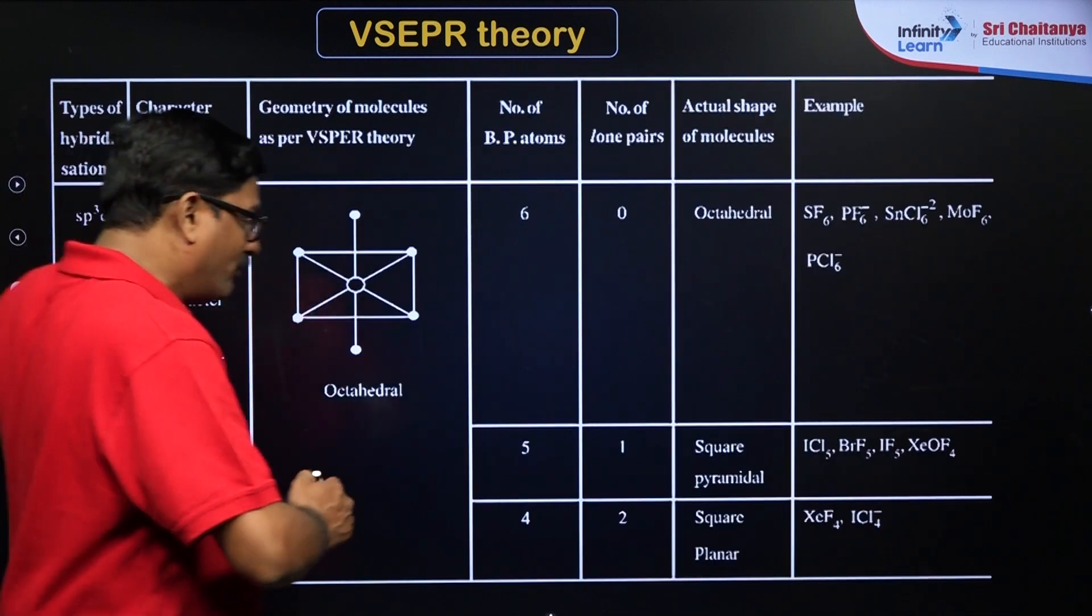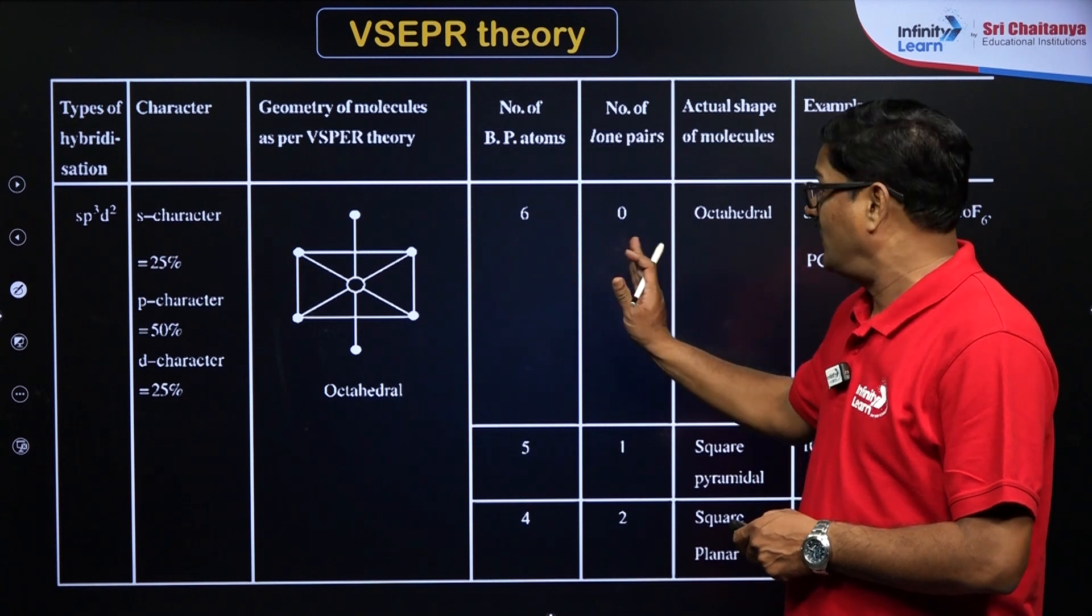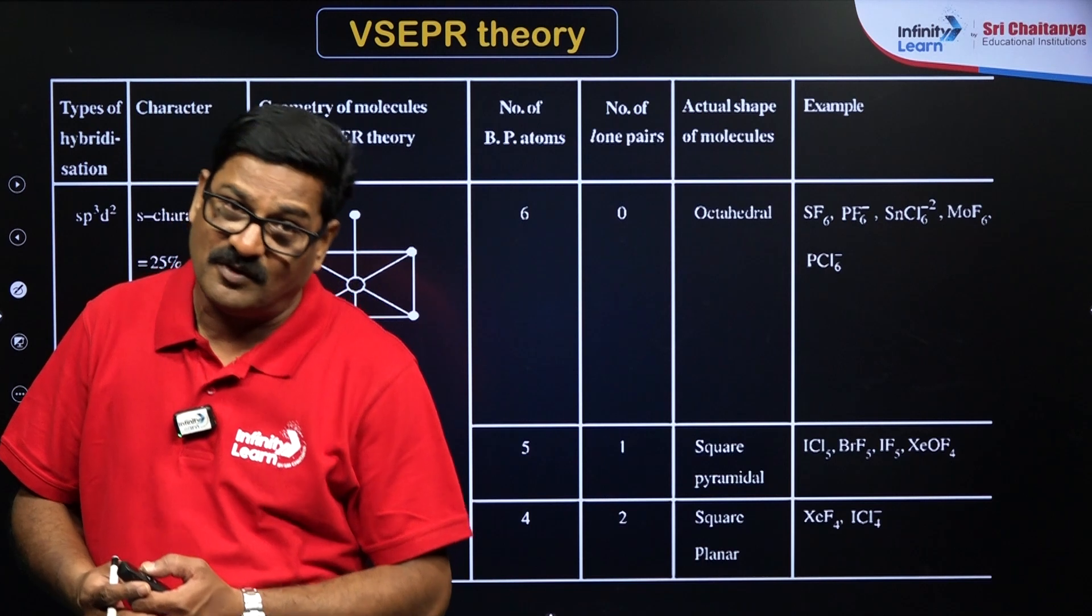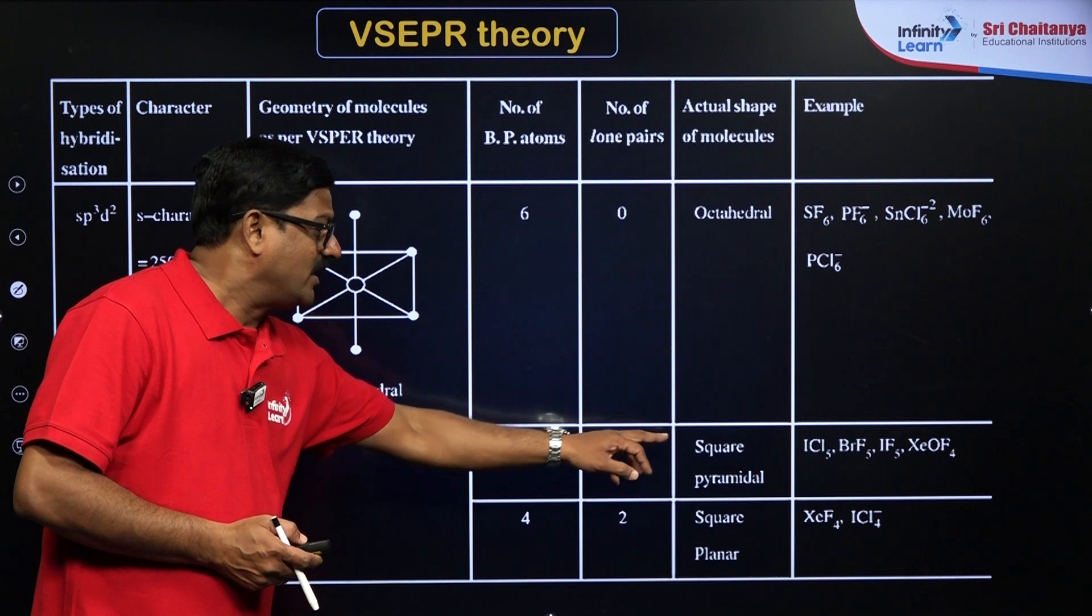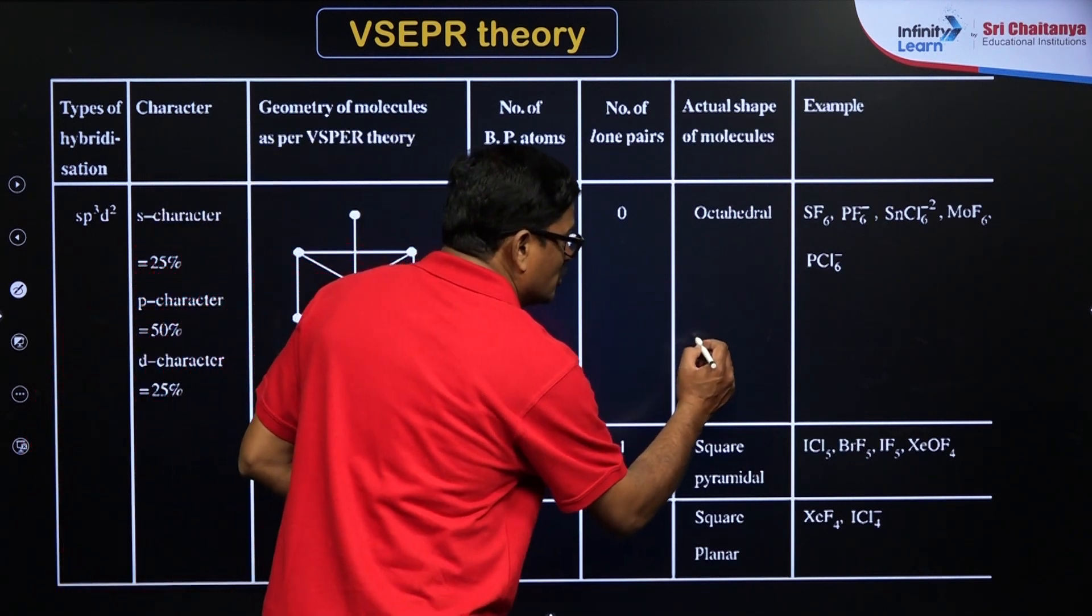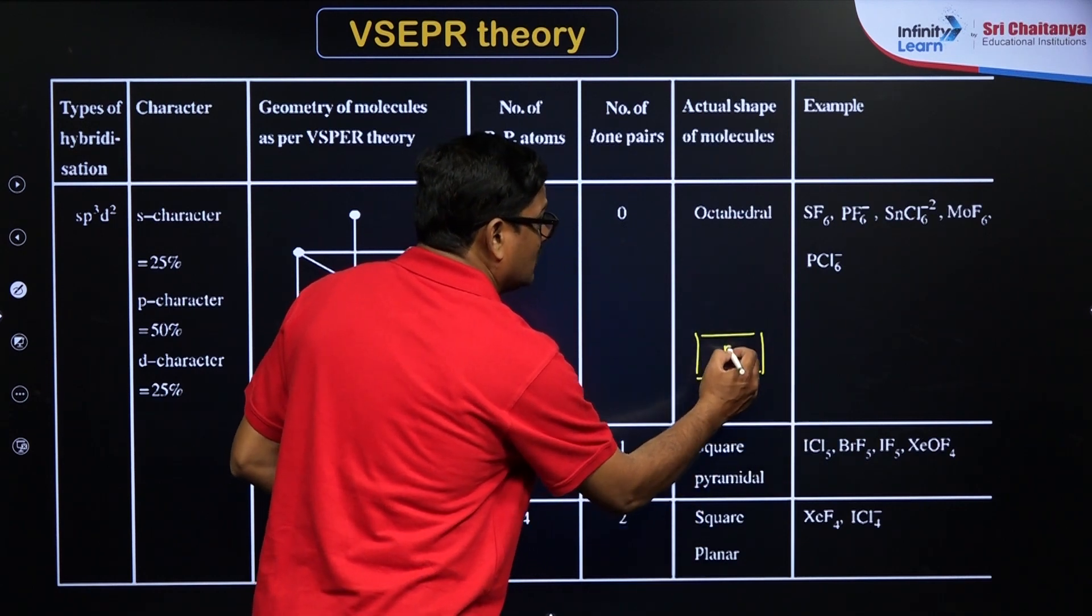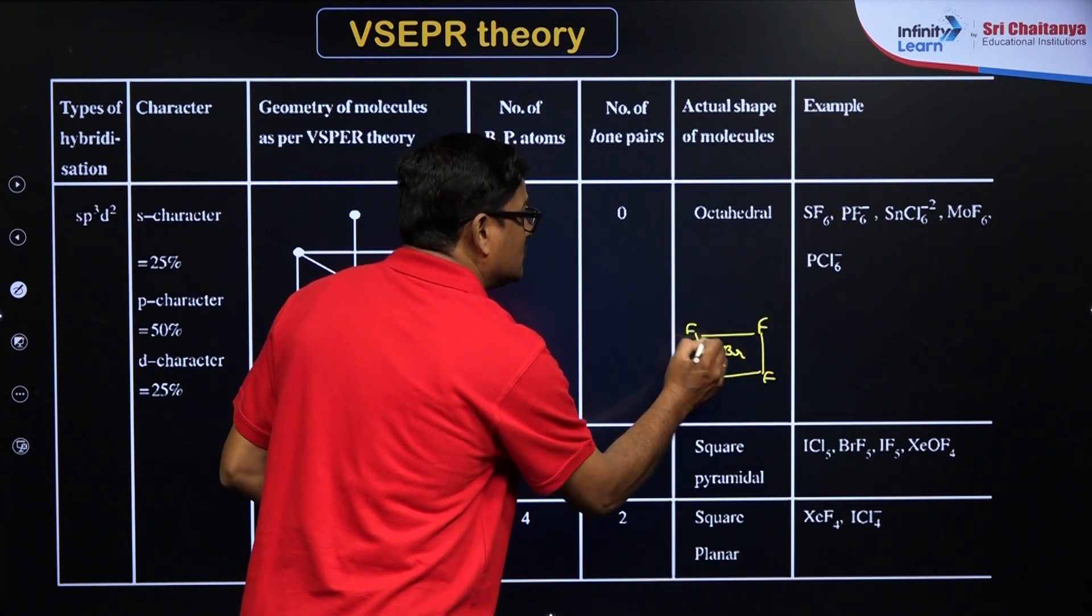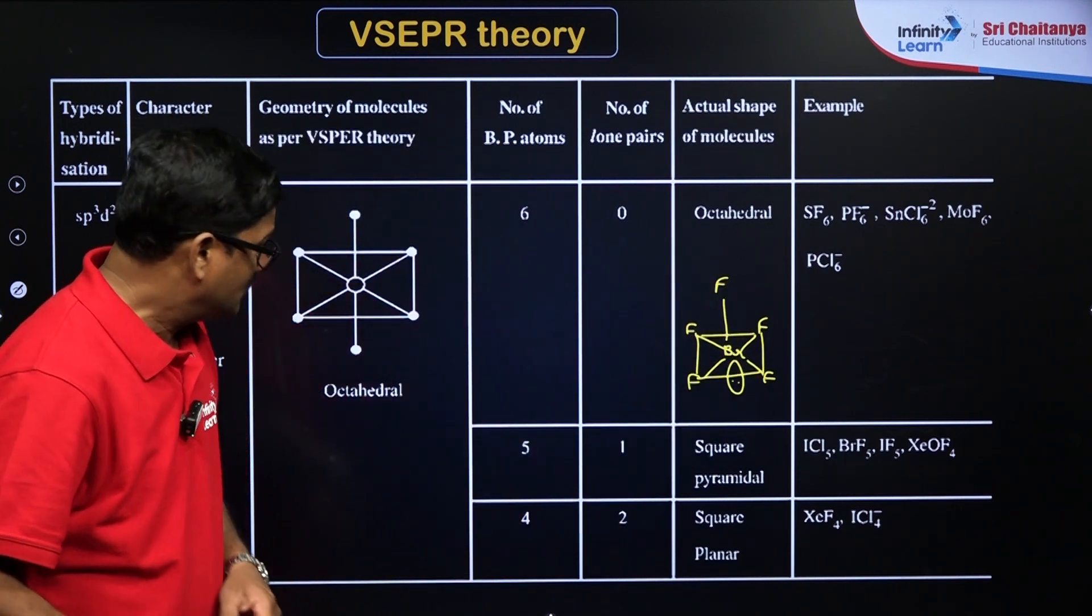And SP3D2, it is going to be octahedral geometry. If it is six bond pairs and zero lone pairs, it is going to be octahedral. Example is sulfur hexafluoride. And if you take 5 and 1, five bond pairs, one lone pair, it is going to be square pyramidal. And its square pyramidal looks like this: that is Br, fluorine, fluorine, fluorine, fluorine. So it is a square and here it is a pyramidal, and it is a lone pair of electron.